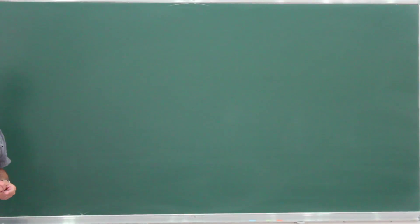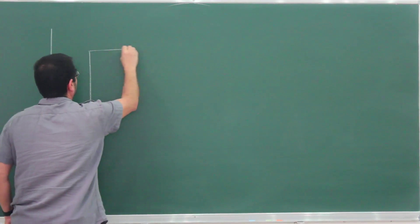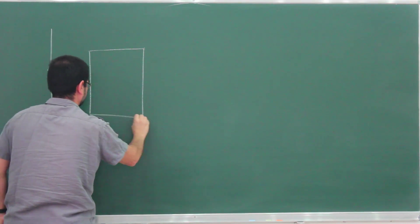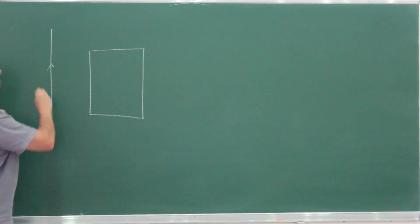This is problem 4 from chapter 30. Here we have a long straight wire and a small rectangular wire loop lying in the same plane.